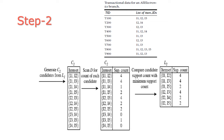In step 2, we need to generate the level-2 item set. For that, we generate C2 from L1. L1 is already known, so from L1 we generate C2, that is the candidate 2-item set.